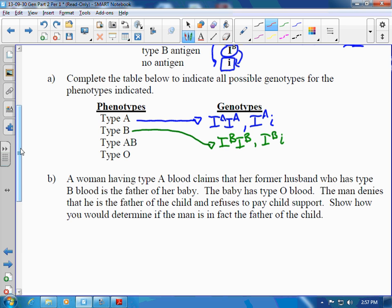There's only one way to be type AB, and of course you guessed it, IA IB. And the only way you are type O is if you are missing either of the big ones, and you'll be little i little i.